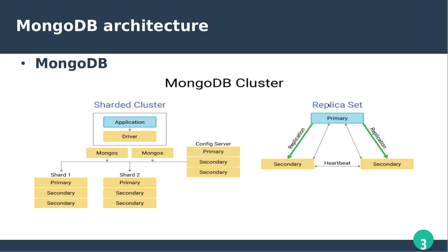A process is a program that is currently executing — it is part of the operating system. When a program is stored on hard disk it is called a program; when it runs it is a process. The group of processes maintains the same data set.